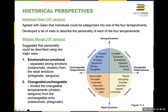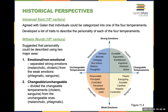Another historical perspective: Immanuel Kant agreed with Galen that individuals could be organized into four temperaments and developed a list of traits to describe each. For example, melancholic is characterized by anxiety and worry. Wilhelm Wundt, who you may recall from Chapter 1 as the first person to have an actual psychology lab in Germany, suggested personality could be described using two major axes.